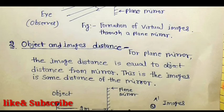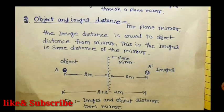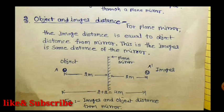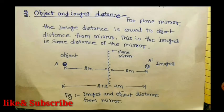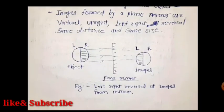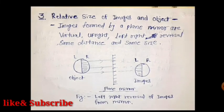The second characteristic of a plane mirror is that image distance equals object distance. The image is at the same distance behind the mirror as the object is in front. For example, if the object is placed 2 meters from the mirror, the image is also 2 meters from the mirror on the other side. We draw a diagram to illustrate this.